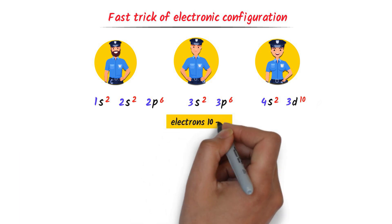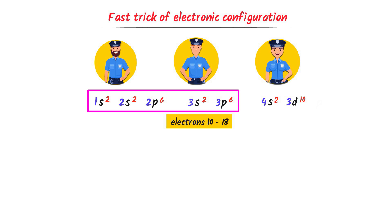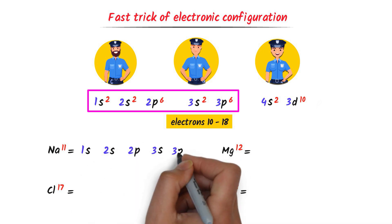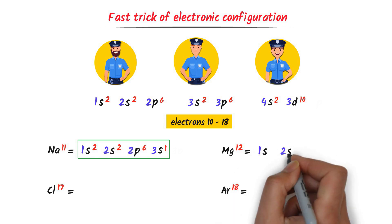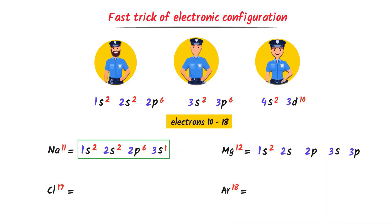If electrons are between 10 and 18, I write SSP-SP type, using 1s, 2s, 2p, 3s, 3p. Sodium has 11 electrons: 2 in 1s, 2 in 2s, 6 in 2p, 1 in 3s — 2+2+6+1=11. No electron in 3p, so I cancel it. Magnesium has 12 electrons: 2 in 1s, 2 in 2s, 6 in 2p, 2 in 3s — 2+2+6+2=12. No electron in 3p, cancel it.